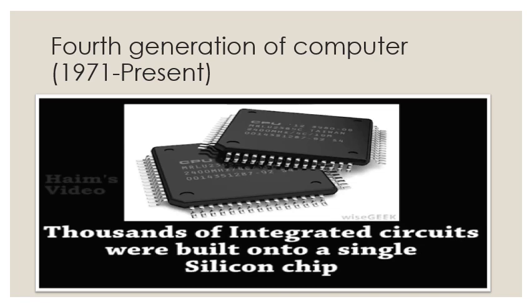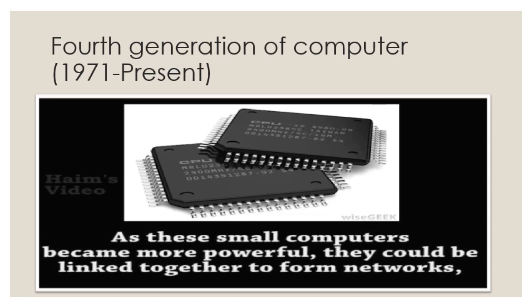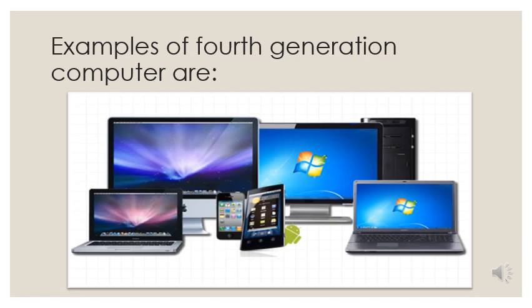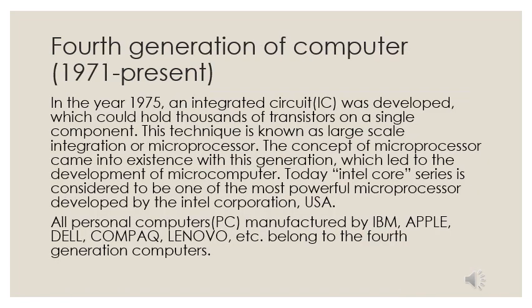The fourth generation of computers began from 1971 and continues till present. Its main component is the microprocessor. Thousands of integrated circuits were built onto a single silicon chip. As these small computers became more powerful, they could be linked together to form networks, which eventually led to the development of the internet. All forms of computers you see around you — desktop computers, laptops, mobile phones, tablets, iPods — are examples of fourth generation computers.